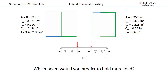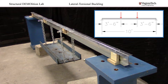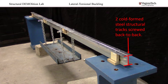To answer this question, we are going to look at a quick demonstration using these two different cross-sectional areas. First, let's look at the setup for the cross-sectional area similar to an I-beam or W section. The beam is 10 feet long, with point loads placed 3 feet and 6 inches from the supports. The section is constructed with two structural tracks screwed back to back, which forms a similar shape to a W section.